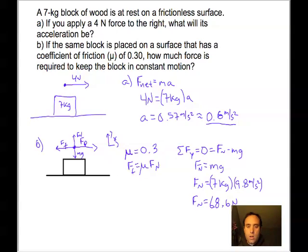We can take that number and plug it into the friction equation, F_f equals mu times F_N. So the force of friction equals 0.30 times the normal force, which we just figured out, 68.6.